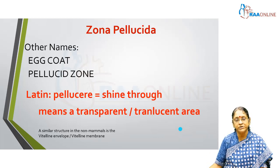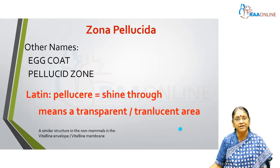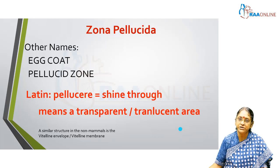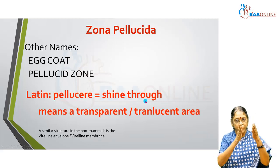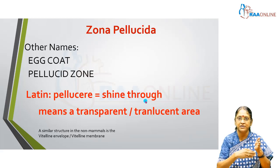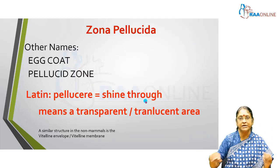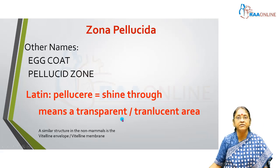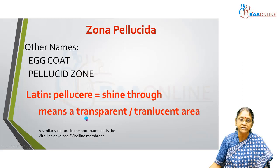The other name given to the zona pellucida is the pellucid zone. Zona pellucida sounds a little Latin, and an anglicized version will be pellucid zone. The Latin term pellucida means shining through — when light shines through a layer, viewing from the other side you're able to see the light. That is what we call a transparent or translucent layer. So pellucida indicates a transparent or translucent area.